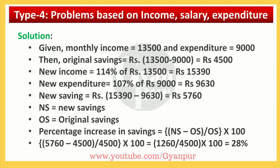We have the monthly income of Rs. 13,500 and expenditure of Rs. 9,000. Let's calculate the original savings first. The original savings is Rs. 13,500 minus Rs. 9,000 — income minus expenditure — that will give you the savings, which is Rs. 4,500.